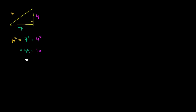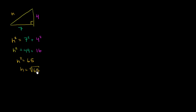49 plus 16: 49 plus 10 is 59, plus 6 is 65. So h squared is equal to 65. Or, taking the square root of both sides, h equals the square root of 65. We can't simplify this further — 65 is 13 times 5, both prime and neither a perfect square — so h equals the square root of 65.